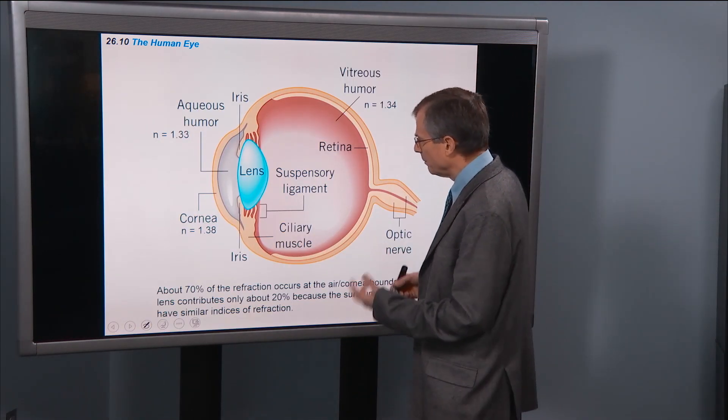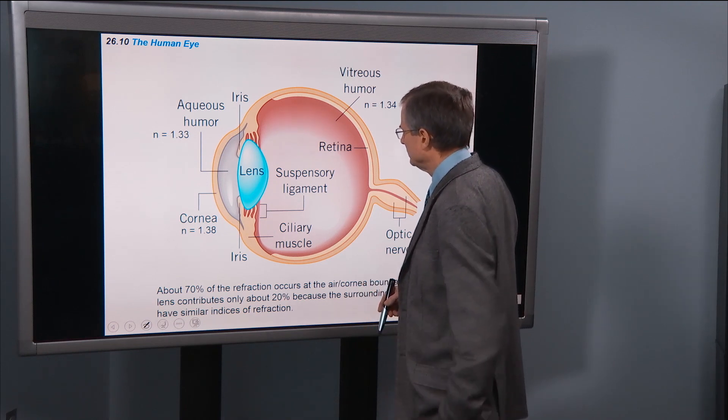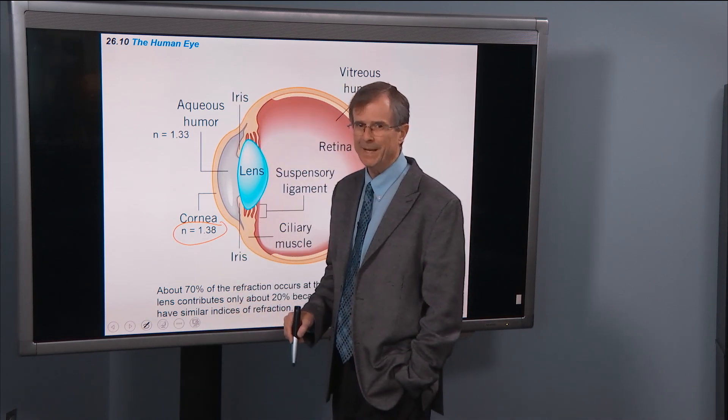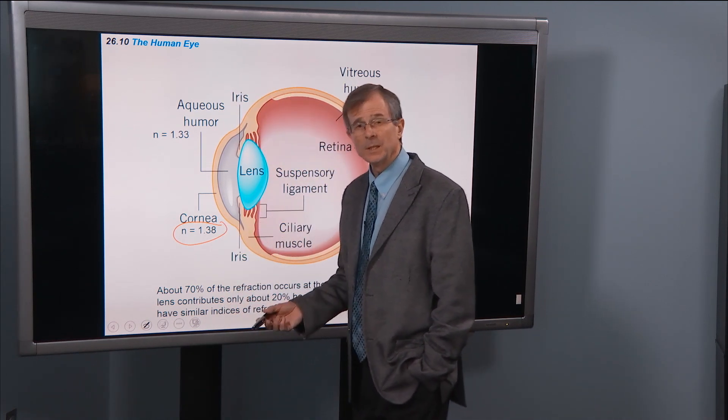The optical components of the eye include the cornea, which has an index of refraction of 1.38. So that's a little bit more than water, which is 1.33.